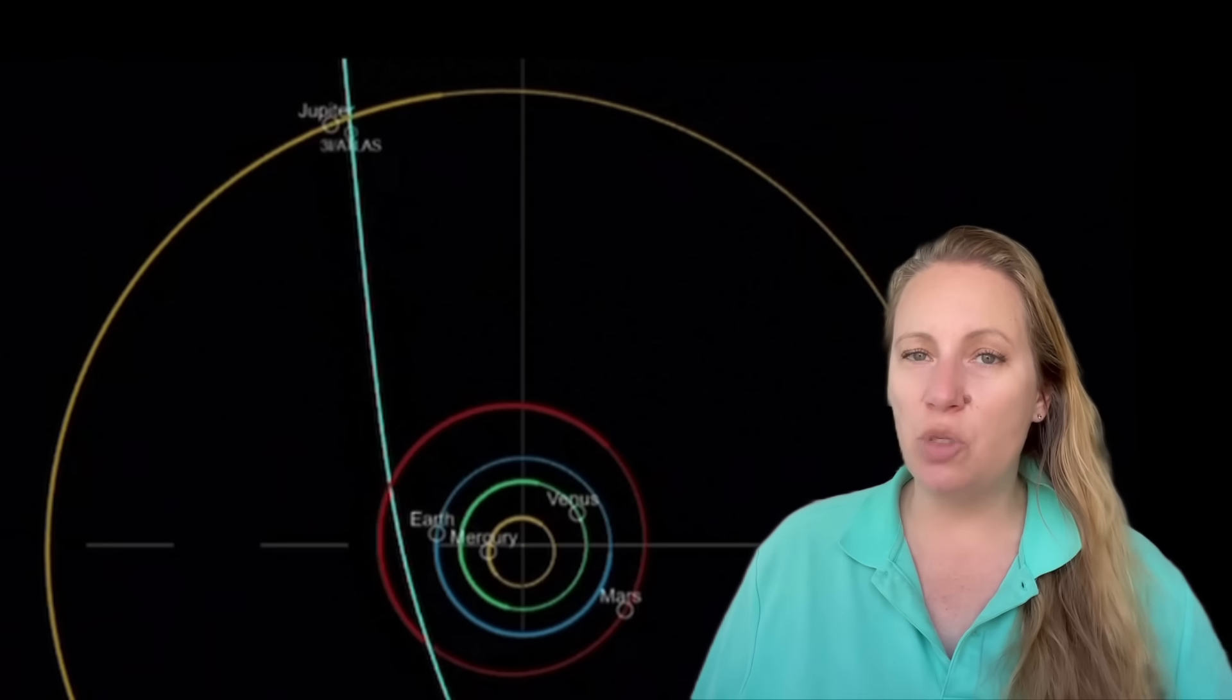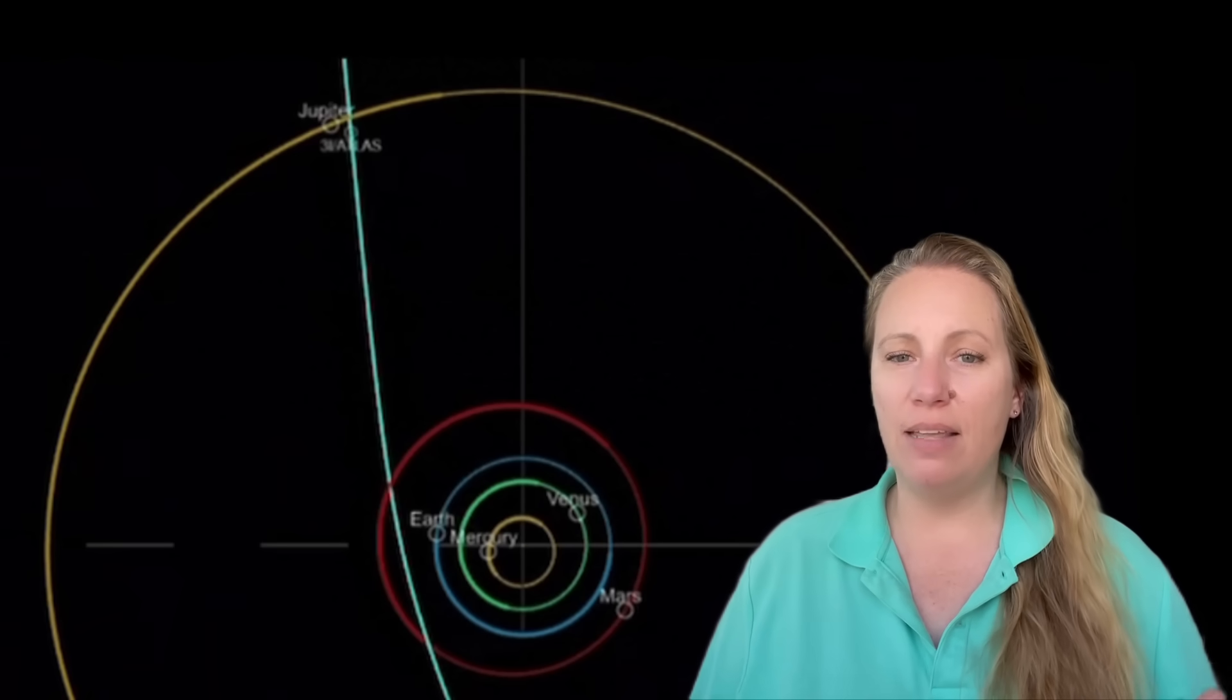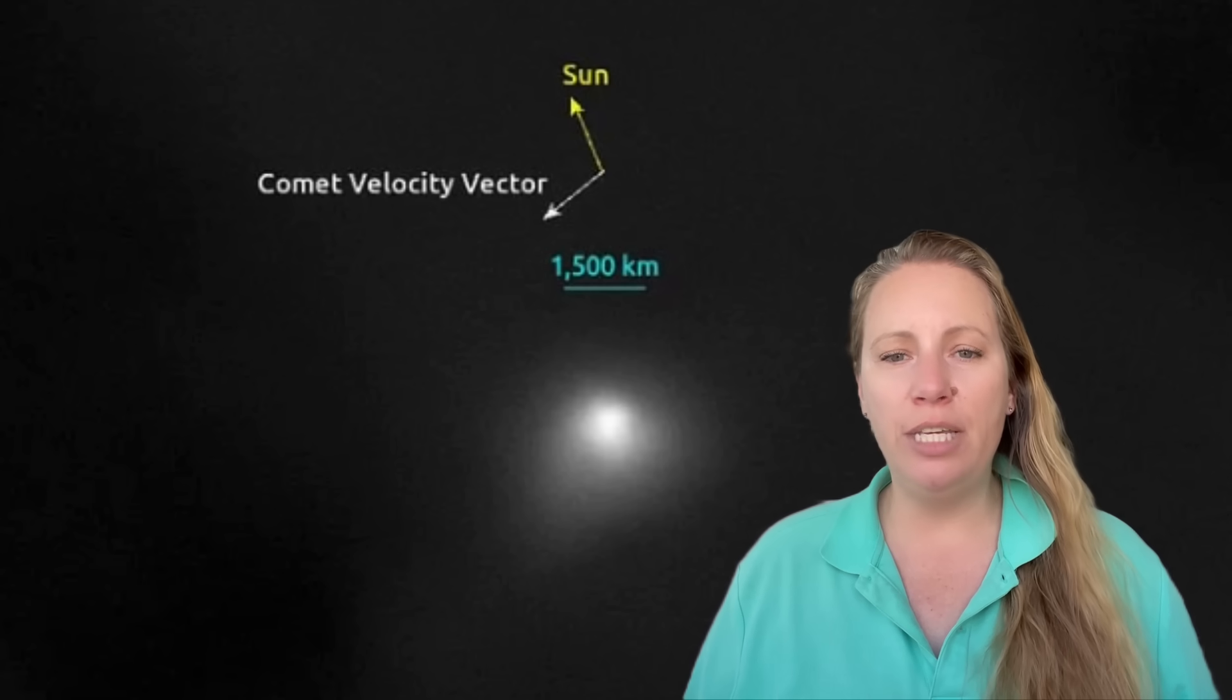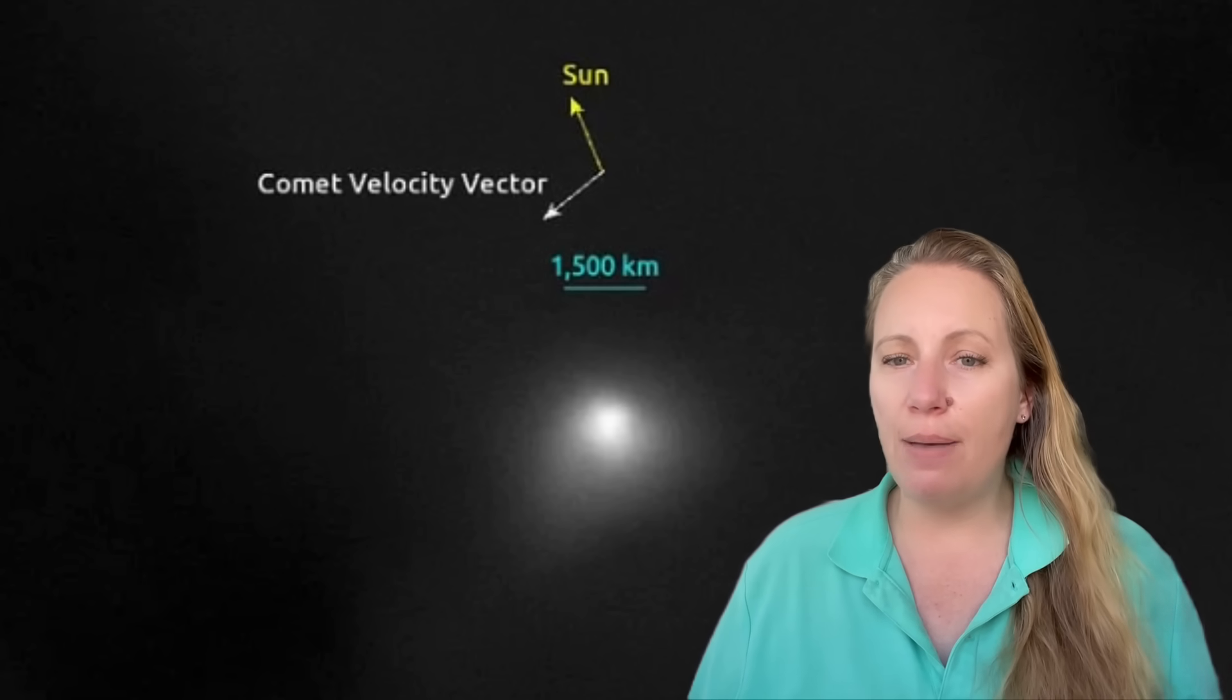So when the viewing angle changes, the features can look shorter, they can look fainter, or they seem to disappear entirely. But we have to stress, they seem, but they're not. They seem to disappear, although they are still here. And that's exactly what has happened with 3i Atlas.